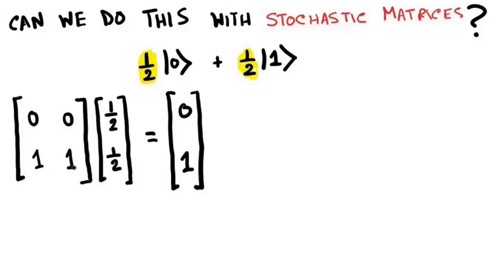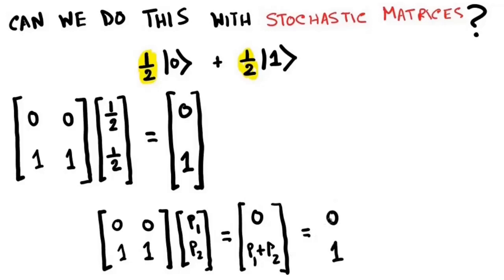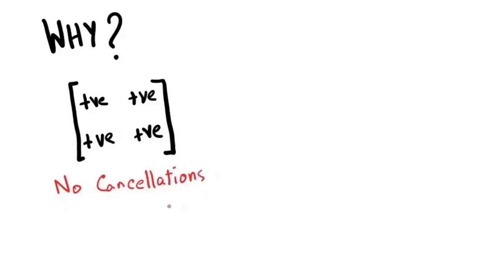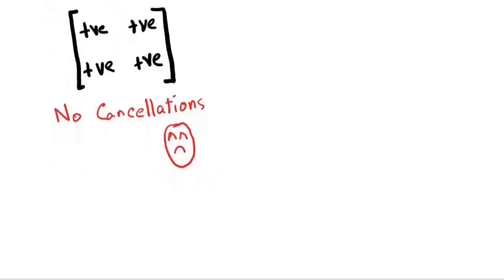You can prove very easily that the only matrix that achieves this is the matrix 0101. The thing is, this matrix represents a deterministic process. We can prove that no matter what input vector you start with, the above matrix will always take it to ket1. Thus, there is no randomized stochastic matrix that takes half ket0 plus half ket1 to ket1. Why? You could say that this is because of cancellations. In a stochastic matrix, we have input vectors with only positive numbers. Every entry is positive. There is no scope of cancellations by the intermingling of positive and negative terms. Cancellations only occur when we allow negative numbers.